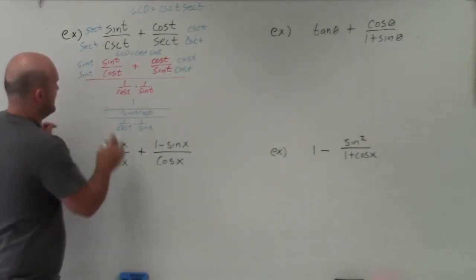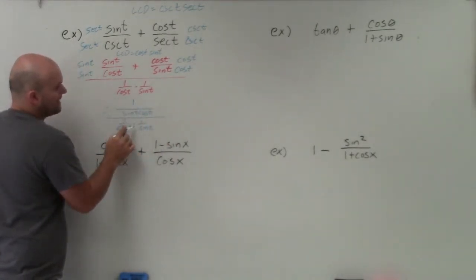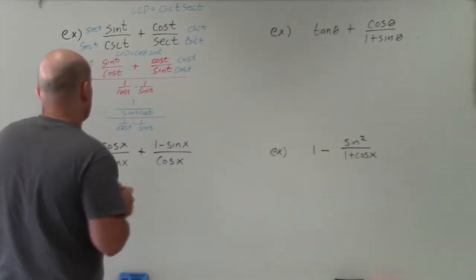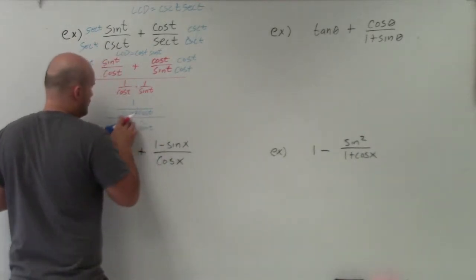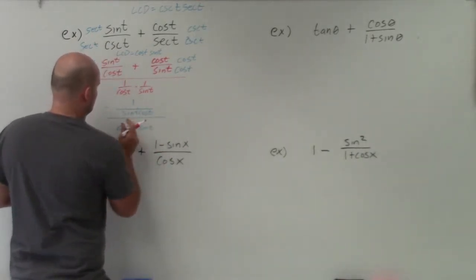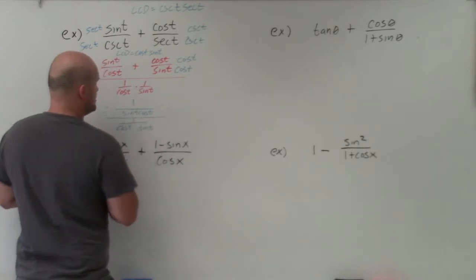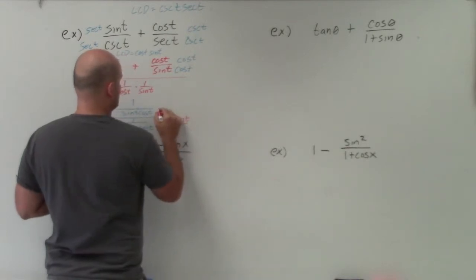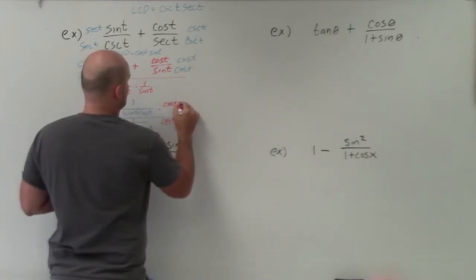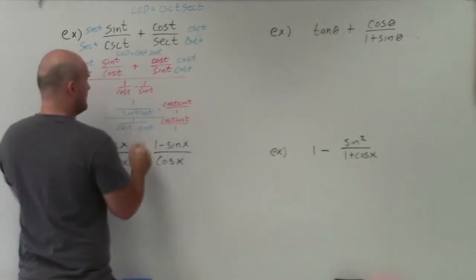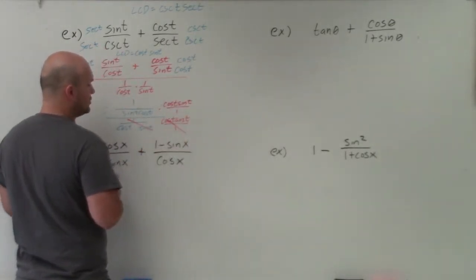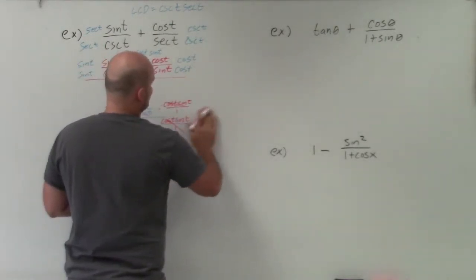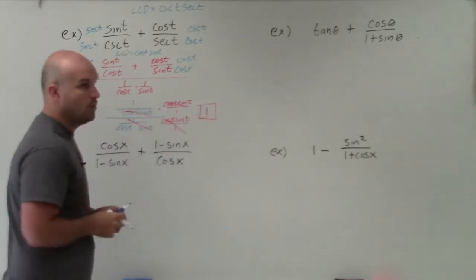Now I have a fraction in the numerator and a fraction in the denominator. To get rid of a fraction in the denominator, we multiply by the reciprocal. The reciprocal here is cosine of t times sine of t over 1. By multiplying, these cancel to 1, and the sine and cosine in the denominator divide out, leaving us with a final simplified expression of just 1.